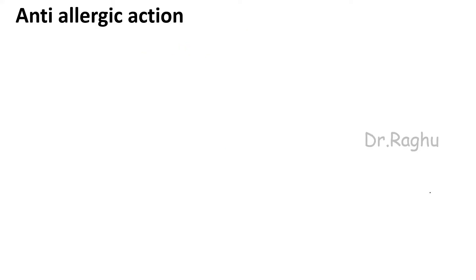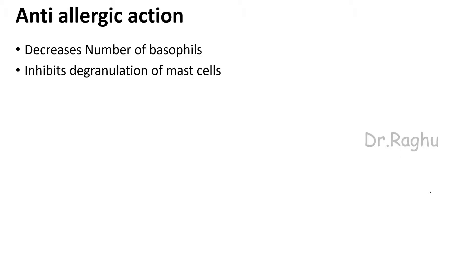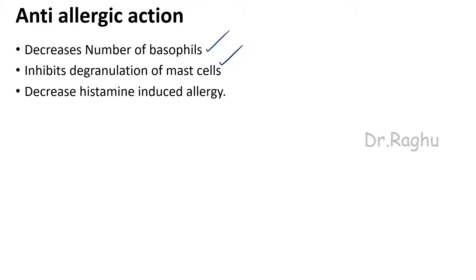Next, the anti-allergic action. The most important chemical mediator of allergy is histamine. Cortisol causes anti-allergic action by decreasing the number of basophils, which secrete histamine, and by inhibiting the degranulation of mast cells. Both basophils and mast cells produce histamine. So ultimately, cortisol decreases histamine-induced allergy.